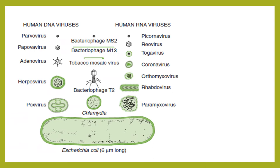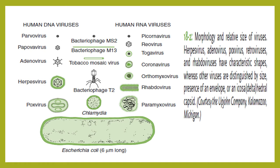We start with the unenveloped groups. Here is a table that compares the sizes of the viruses, both DNA and RNA, in comparison to the smallest bacteria which is Chlamydia, and a common average bacterial size which is E. coli. The smallest human RNA virus is the picornavirus, and the largest among the human RNA viruses is your paramyxovirus. For human DNA viruses, the smallest is parvovirus and the largest is the pox virus.